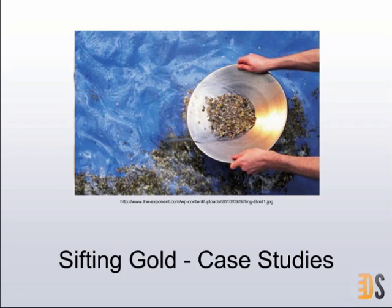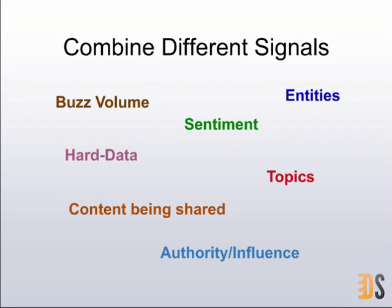I thought it would be more interesting to show some actual use cases. Going back to the first slide — it's not just about text. As Sue said, you get real insight when you start combining different streams and different sources and analyzing information from different facets. If you only look at data volume or filter by topic, what you get out is limited and mostly guessable. But if you correlate volume, sentiment, topics, and the influence of the people talking about them, you can find interesting correlations that aren't obvious straight away.